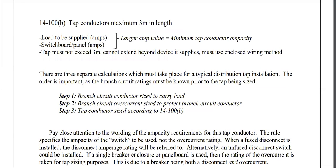14-100B and 14-100C are the two tap conductor rules used with splitter installations. The difference is that B is for tap conductors with a maximum length of three meters. As you read through the rule, it can be rather confusing to determine exactly what ratings should be used to determine the tap conductor ampacity. The tap conductor that is three meters or shorter is sized to the larger of these two values: the load to be supplied, or the switchboard or panel amperage rating. Whichever is larger is the minimum tap conductor ampacity. The tap must not exceed three meters, cannot extend beyond the device it supplies, and must use an enclosed wiring method.